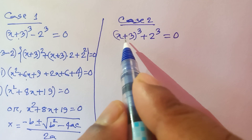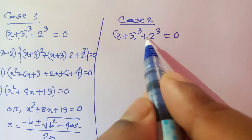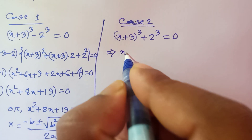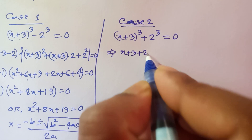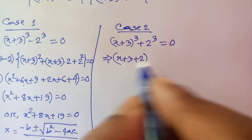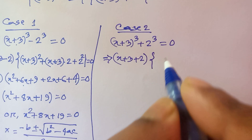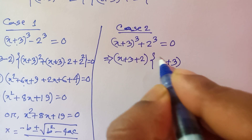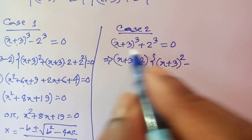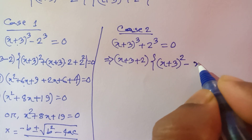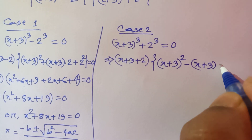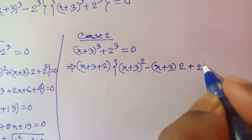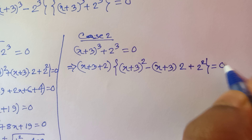Now for Case 2, we use the a cubed plus b cubed formula. We can write x plus 3 plus 2, times x plus 3 whole squared, minus x plus 3 times 2, plus 2 squared, is equal to 0.